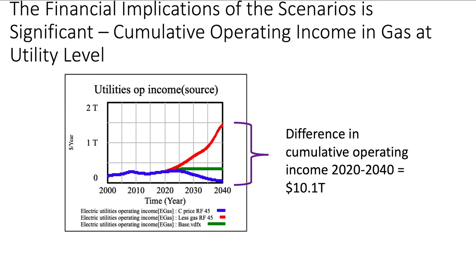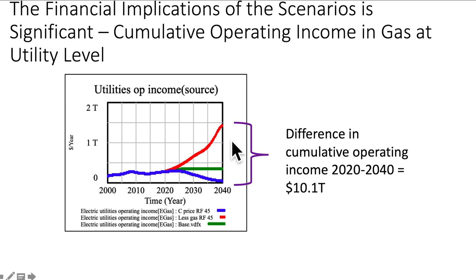The implications at the utility level are significant as well. This is the electric utility operating income for every year — the base is green, the carbon price scenario is blue, and the red scenario is with less coal and a very different pathway. The difference in operating income from 2020 to 2040 in this case is $10.1 trillion.